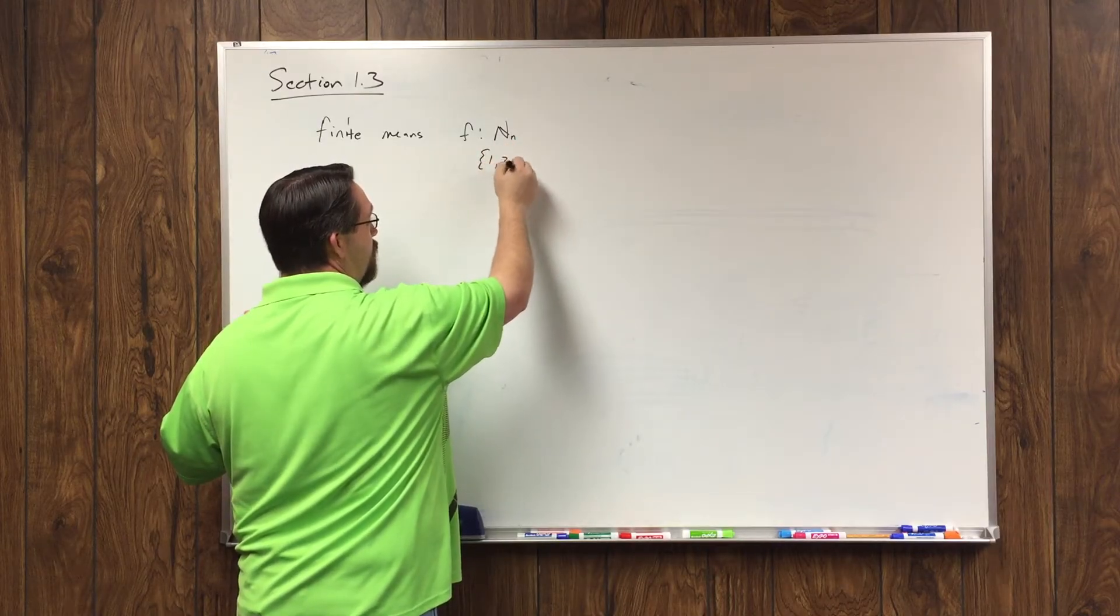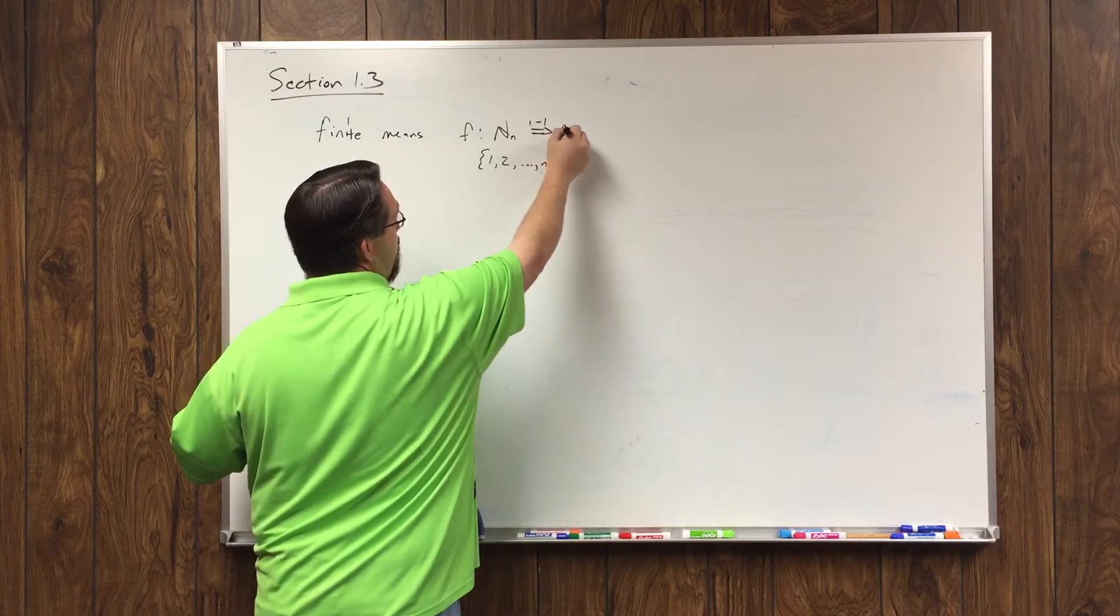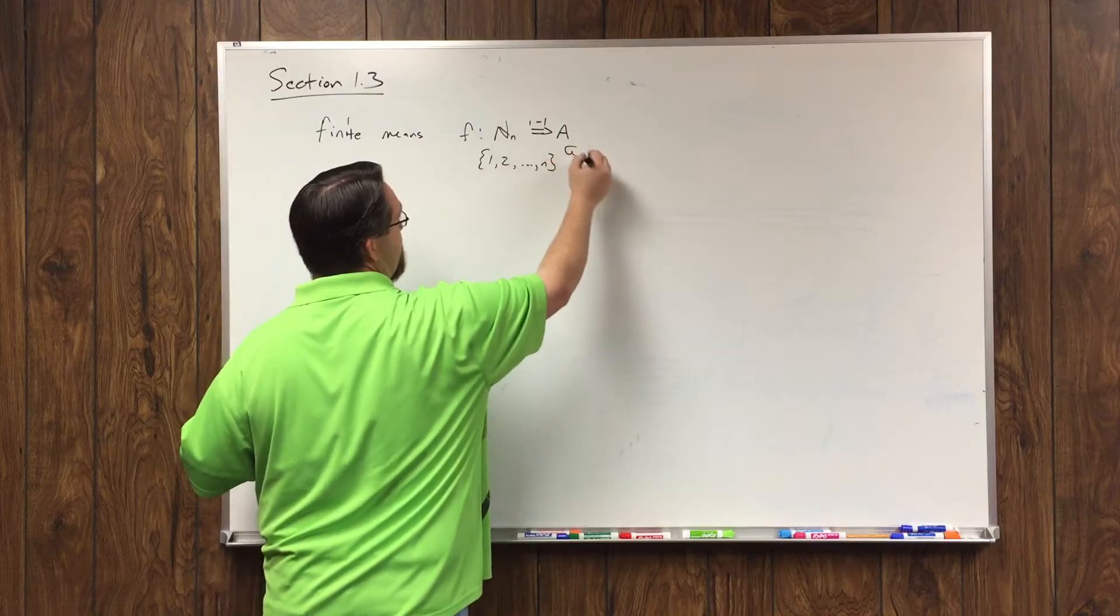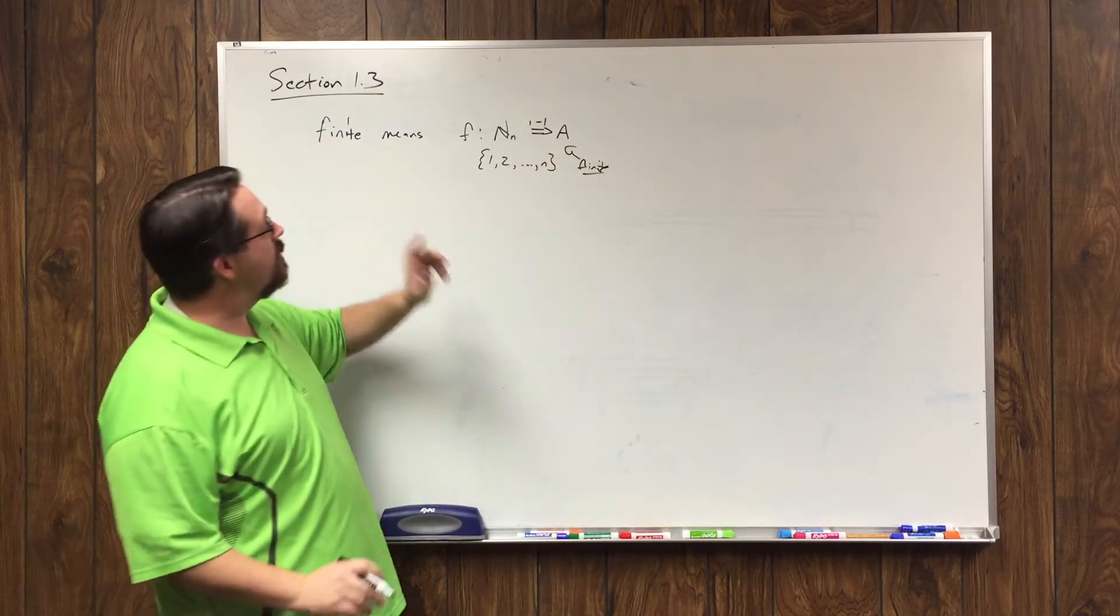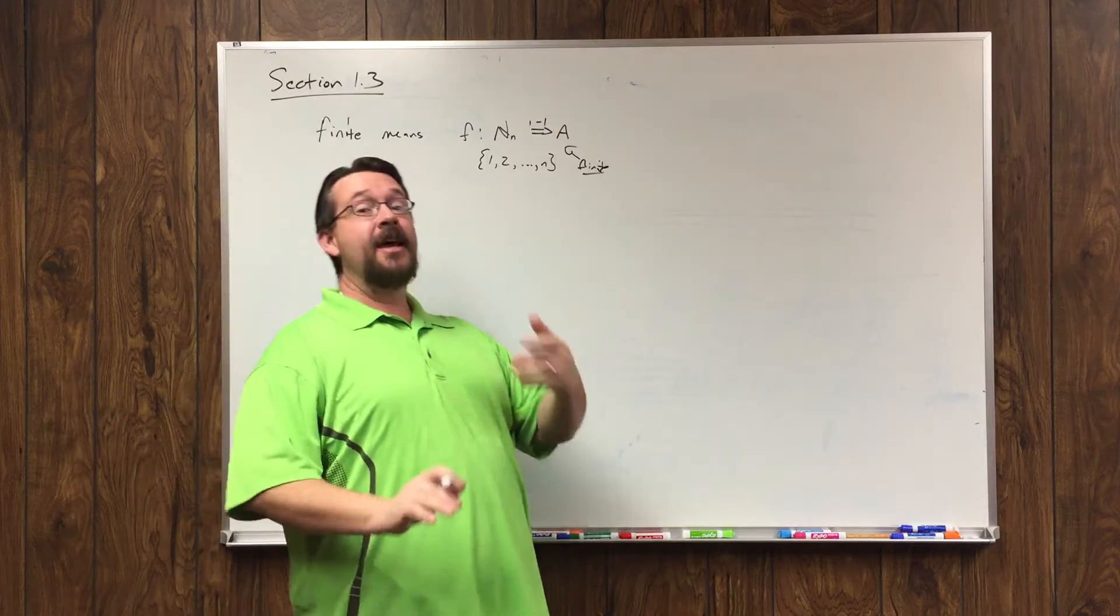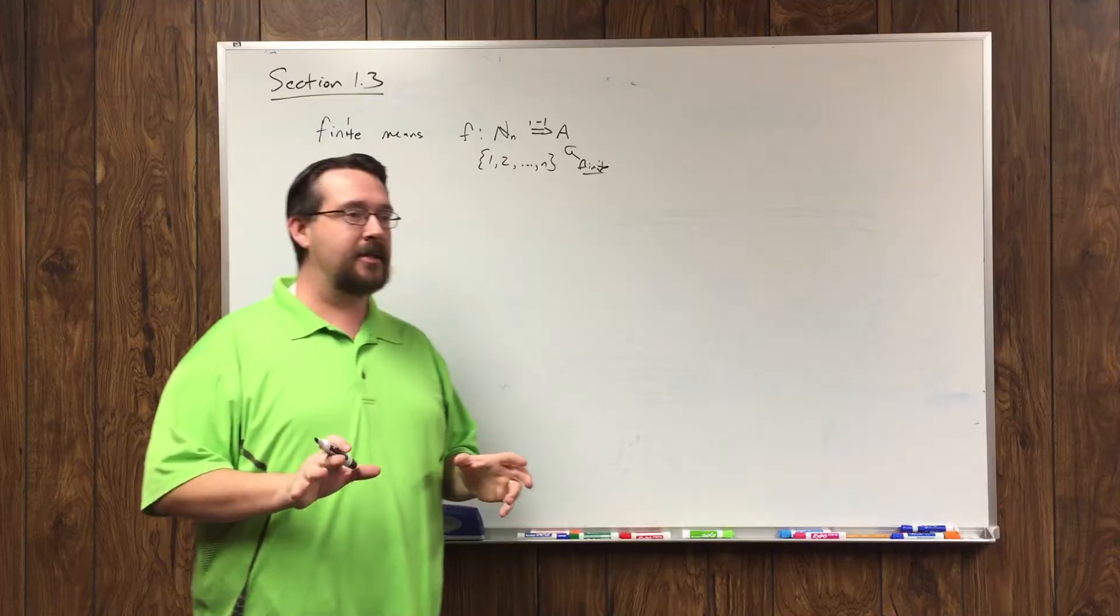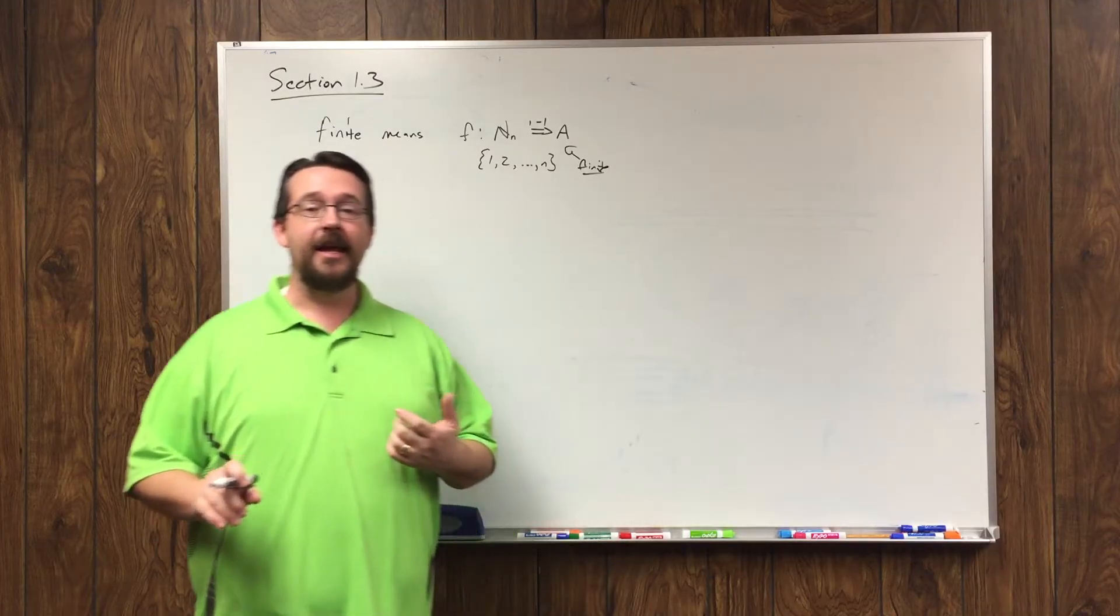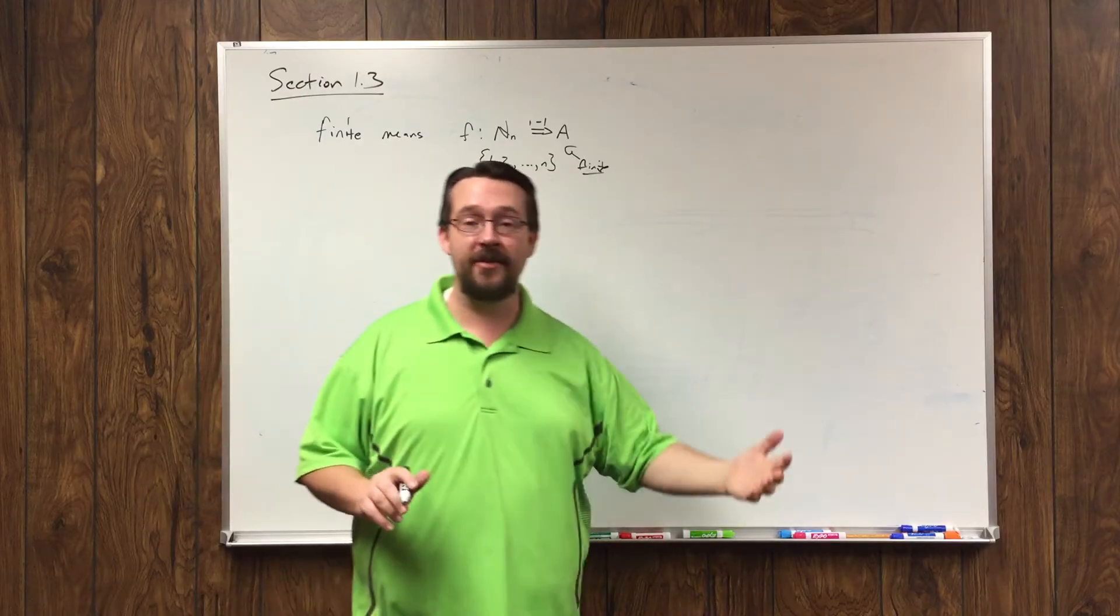That's the set 1, 2, up to n. In a one-to-one and onto way onto that set, that means that A is finite. Now, any set for which no such bijection exists is called an infinite set. We did a lot of discussion last time about some different properties of infinite sets.